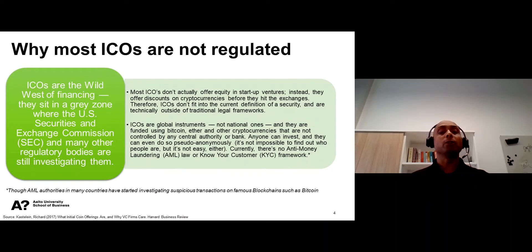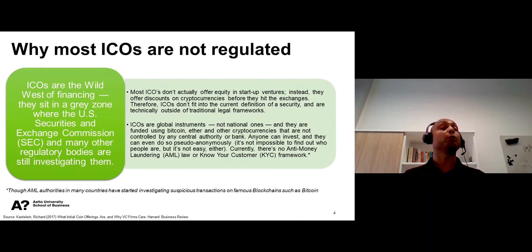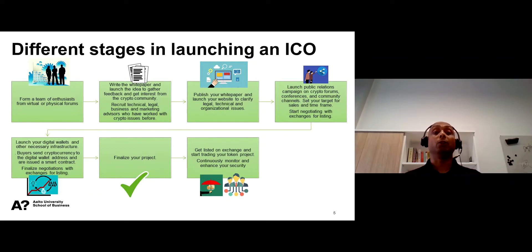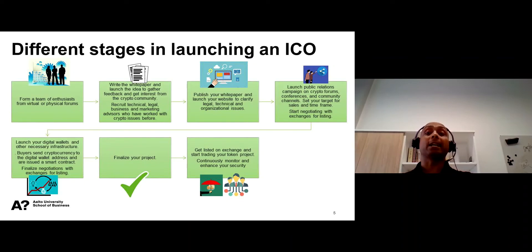It is important to note that while ICOs are not regulated, many anti-money laundering authorities are using technology to monitor transactions on popular crypto platforms such as Bitcoin. Finally, in this module, we will learn about the different stages in launching an ICO. We could categorize the ICO launching process into seven steps, as shown on the slide, covering different aspects from conception to final offering of the ICO.